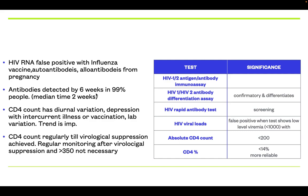So, we do the antibody test by 6 weeks, and almost all people will be positive if they are infected. The CD4 count has some fallacies — it has diurnal variation, depression with intercurrent illness or vaccination, and lab variation. So, the trend is important, not the absolute single value of CD4 count.